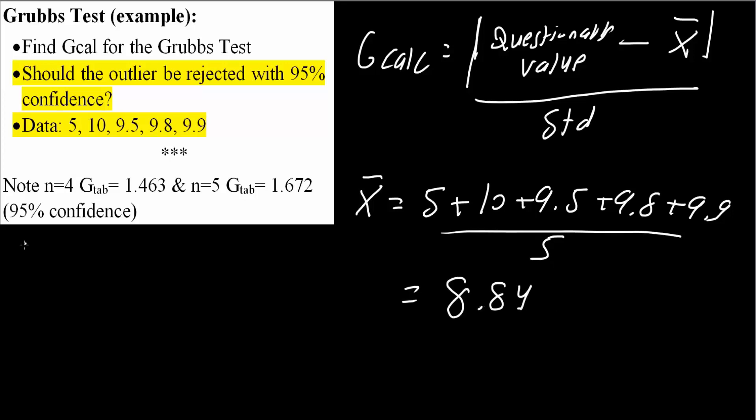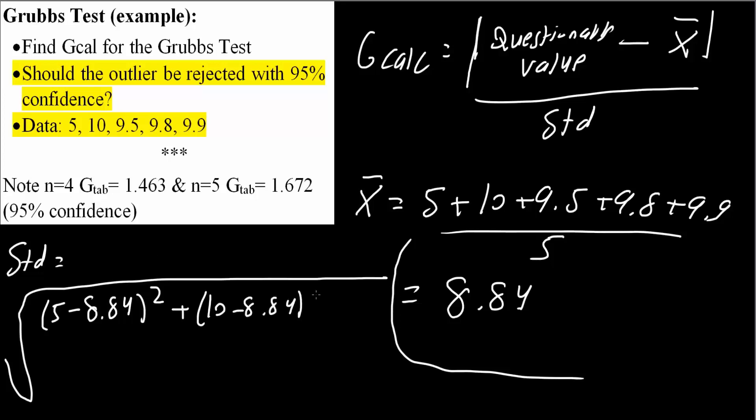Next we will calculate the standard deviation. This equals the square root of: (5 minus 8.84) squared, plus (10 minus 8.84) squared, plus (9.5 minus 8.84) squared,